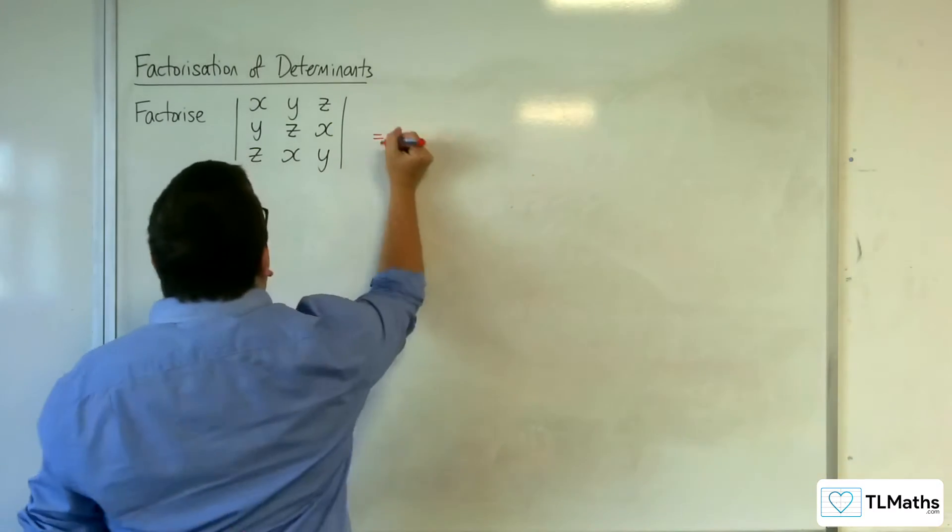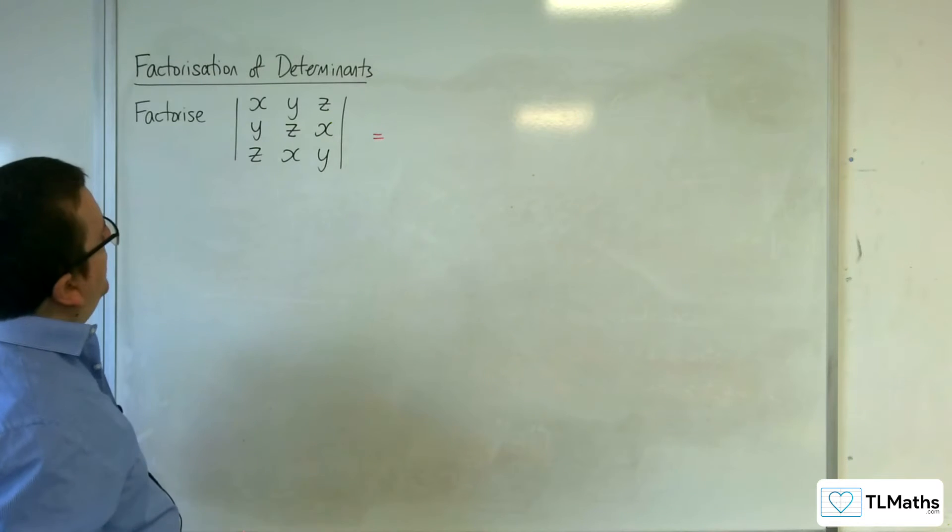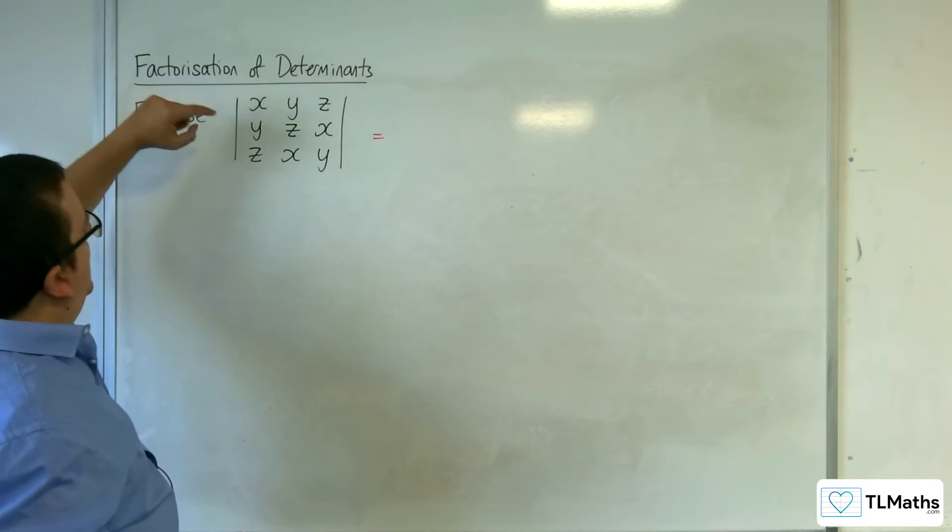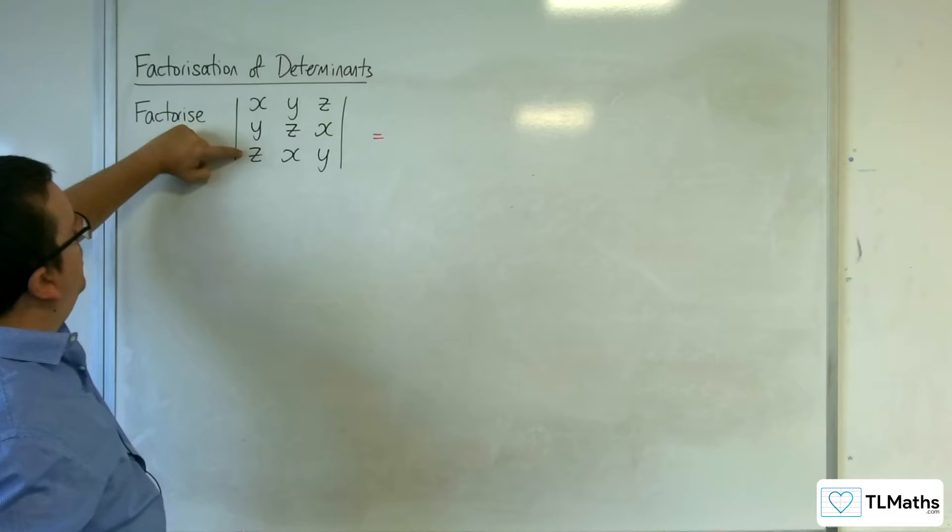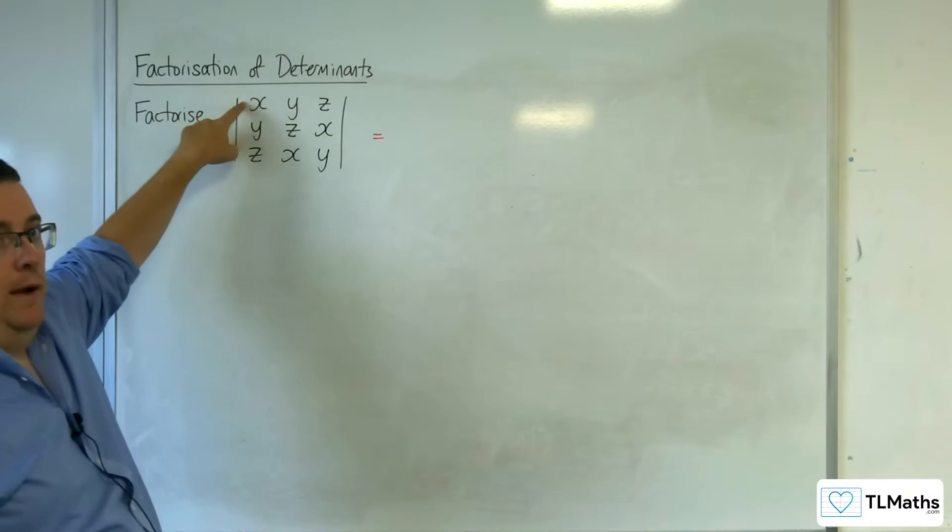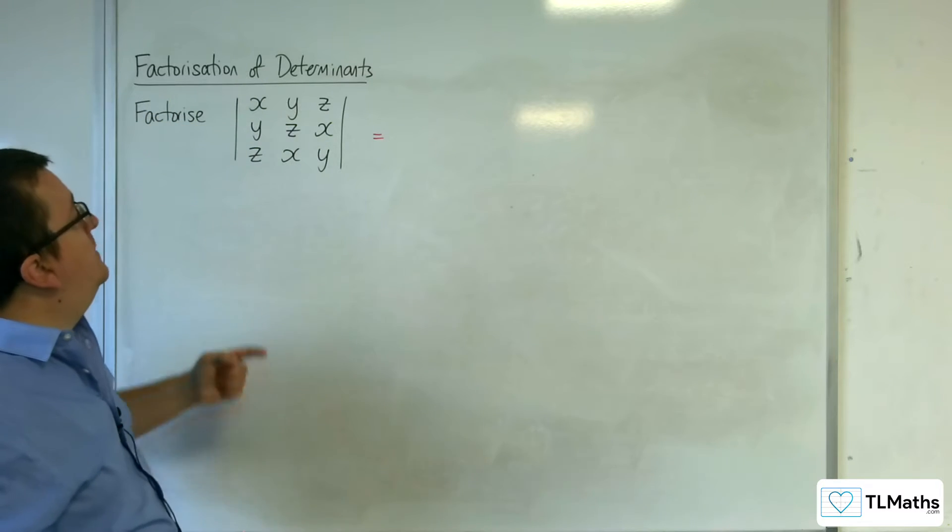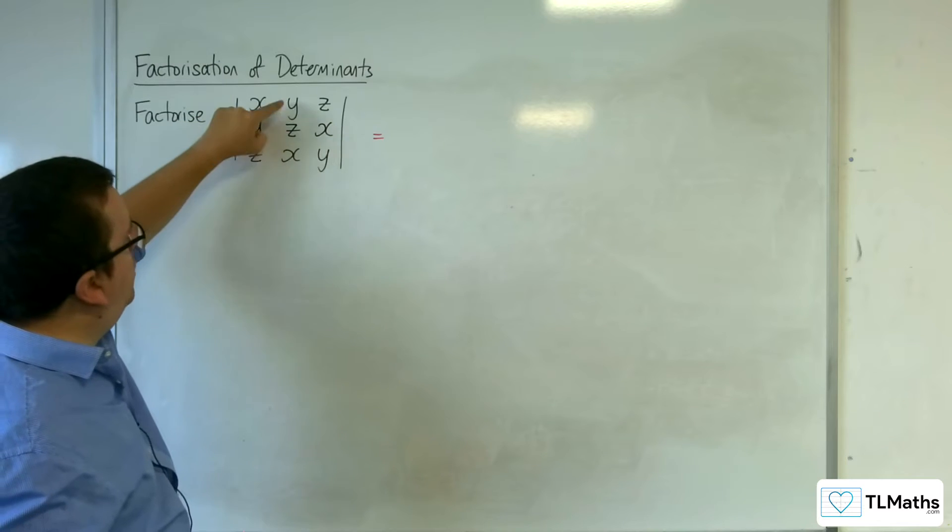So first thing I'm going to do is I'm going to add rows 2 and row 3 to row 1. Now the reason why I would do that is because you've got x, y, z, x